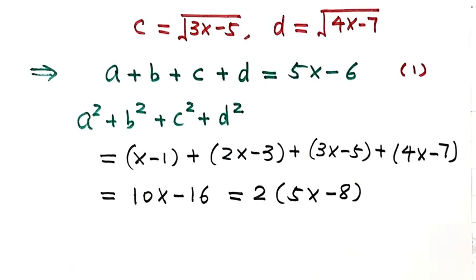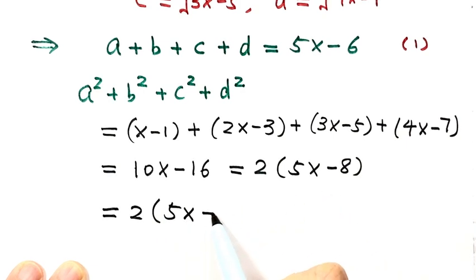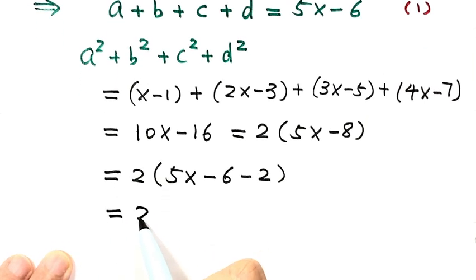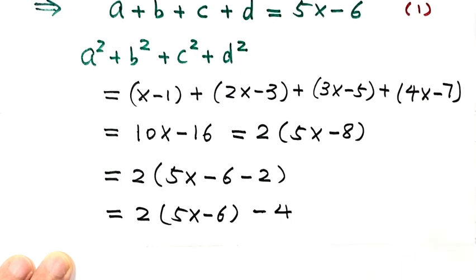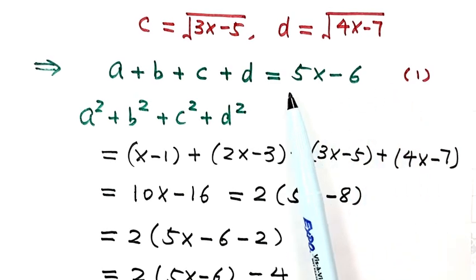Now comes an interesting trick. We rewrite this as 2 times (5x minus 6 minus 2), which equals 2 times (5x minus 6) minus 4. The reason we do this is to recognize that 5x minus 6 appears on the right-hand side of equation 1.